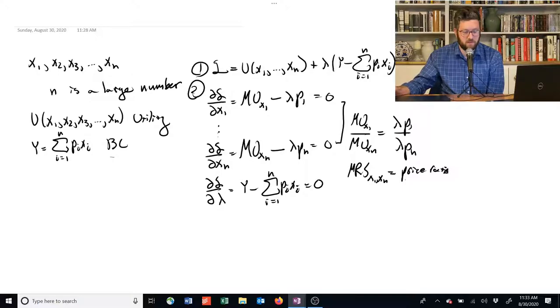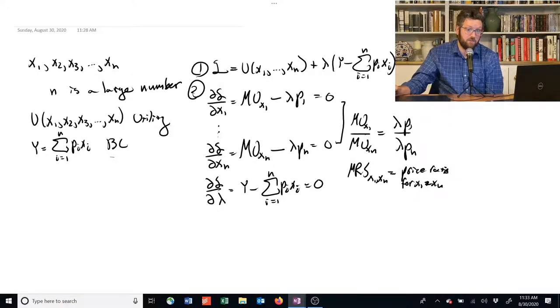I've run out of space to write. So I can choose however I want to solve the system. I'm going to end up with N minus 1 of these if I combine X1 with each of the remaining equations. And then I'm going to also have the budget constraint.